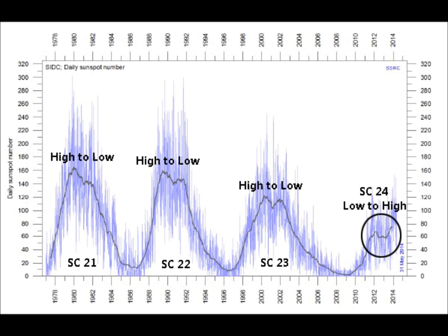To the far right in the circle you'll notice how solar cycle 24 goes from a low initial peak into a secondary higher peak, and after that it's forecast to drop off into the regular cyclical 11-year minimum. Notice the pattern is usually a high first peak followed by a low secondary peak.